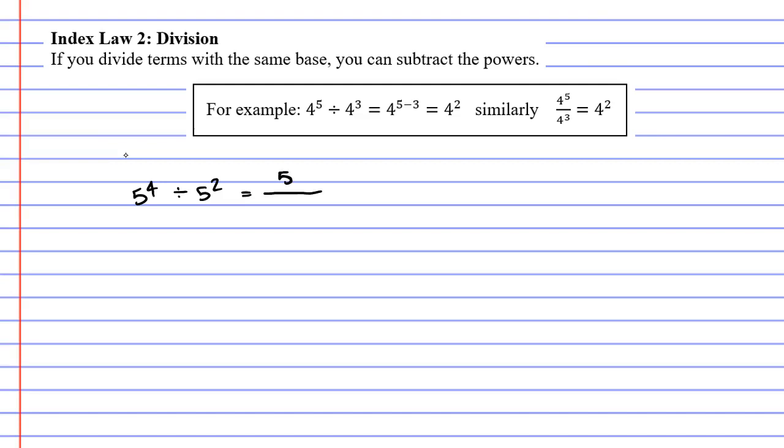So we're going to write it as 5 to the power of 4 over 5 to the power of 2, since fractions and division work the same. Now, if we expand this expression,